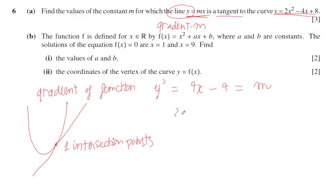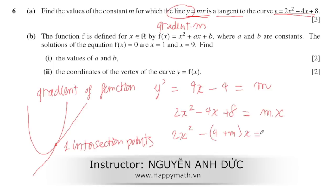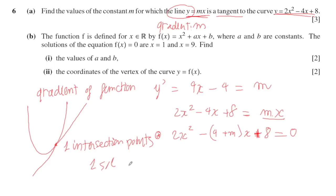So I set 2x squared minus 4x plus h equal to m (the line), and this function will have only one solution. After rearranging — moving mx from the right to the left — I get a new quadratic. For this to have only one solution, the discriminant must equal zero. This is the condition for a quadratic equation to have exactly one solution.